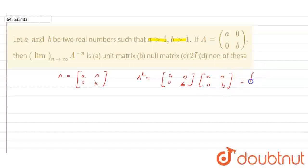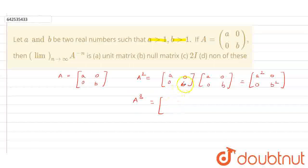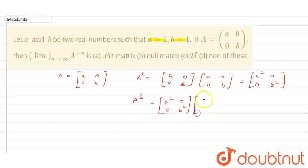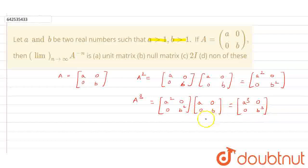After multiplying those two matrices we get [[a², 0], [0, b²]]. Now let us calculate A cubed. For deriving the general formula we need at least A squared and A cubed. So A cubed equals [[a², 0], [0, b²]] multiplied by [[a, 0], [0, b]], giving us [[a³, 0], [0, b³]]. This is the value for A cubed.